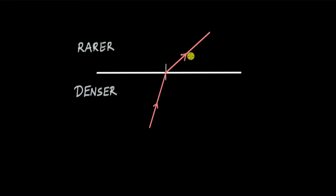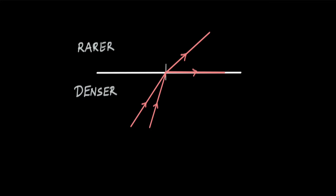There comes a point when the angle of incidence is such that the refracted ray just moves along the surface. This angle of incidence is the critical angle. On increasing the angle of incidence just slightly more than the critical angle, all the light gets reflected. We call it total reflection because 100% of light is getting reflected — no light is getting refracted when the incidence angle is greater than the critical angle.